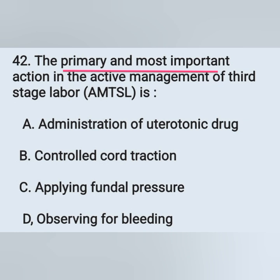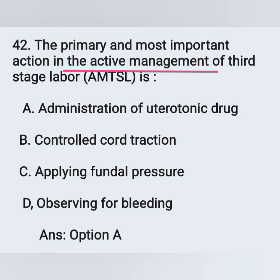Question 42: The primary and most important action in the active management of the third stage of labor is — options: option A, administration of uterotonic drug; option B, controlled cord traction; option C, applying fundal pressure; option D, observing for bleeding. The correct answer is administration of uterotonic drug, option A.